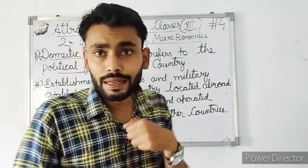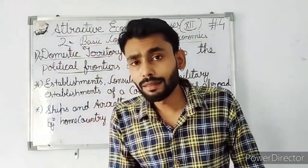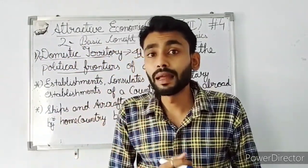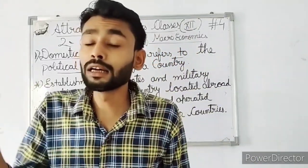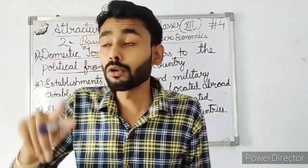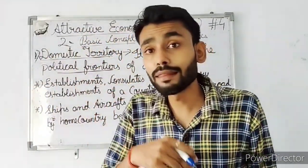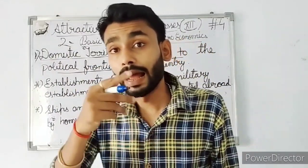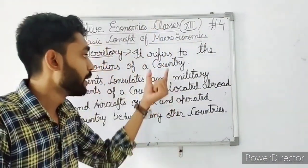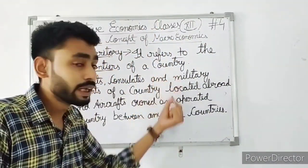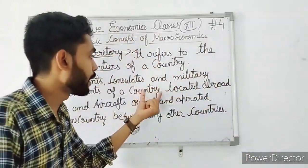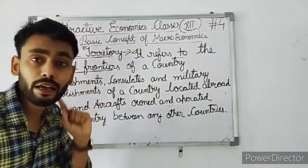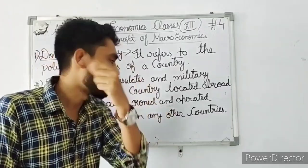For example, India ki embassy hai — theek hai — India ki embassy located hai Japan mein, ya India ki embassy located hai Russia mein. Toh kya hoga: India ki embassy hai, hai toh hamare desh ke naam pe, lekin iska location Japan ya Russia hai — toh uski domestic territory kya hogi? Uski domestic territory hogi hamaari India.